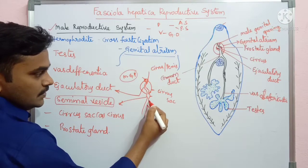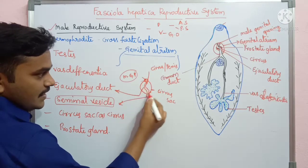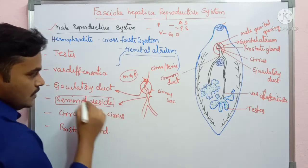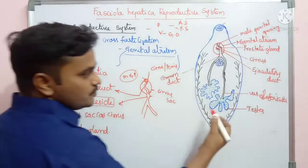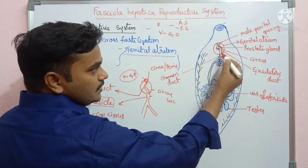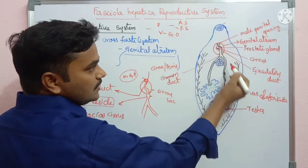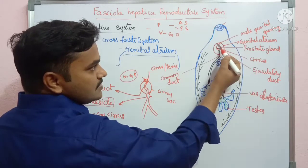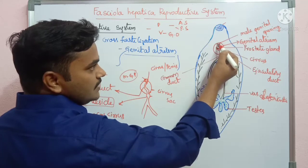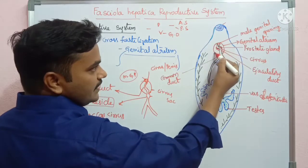The arrangement of the male reproductive system is: testes → common duct → seminal vesicle → ejaculatory duct → cirrus → cirrus sac → male genital pore. This common duct leads into the seminal vesicle, then the cirrus, then the cirrus sac, then the duct region, and finally the male genital opening — the male genital pore.